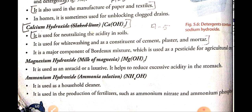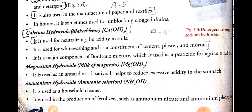The next base is ammonium hydroxide, also known as ammonia solution. It is used as a household cleaner and also for the production of fertilizers such as ammonium nitrate and ammonium phosphate. Fertilizers are used to increase the productivity of crops.